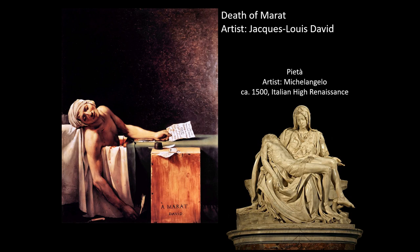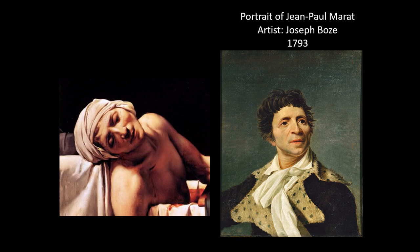Another way that David generated sympathy for Marat was by idealizing his face. Marat wasn't the most handsome guy — his face is very angular with an asymmetry to it, as you can see in Google searches of Marat portraits. What David does is soften up the face a little bit, making him look a little more handsome to win over the viewer all the more.